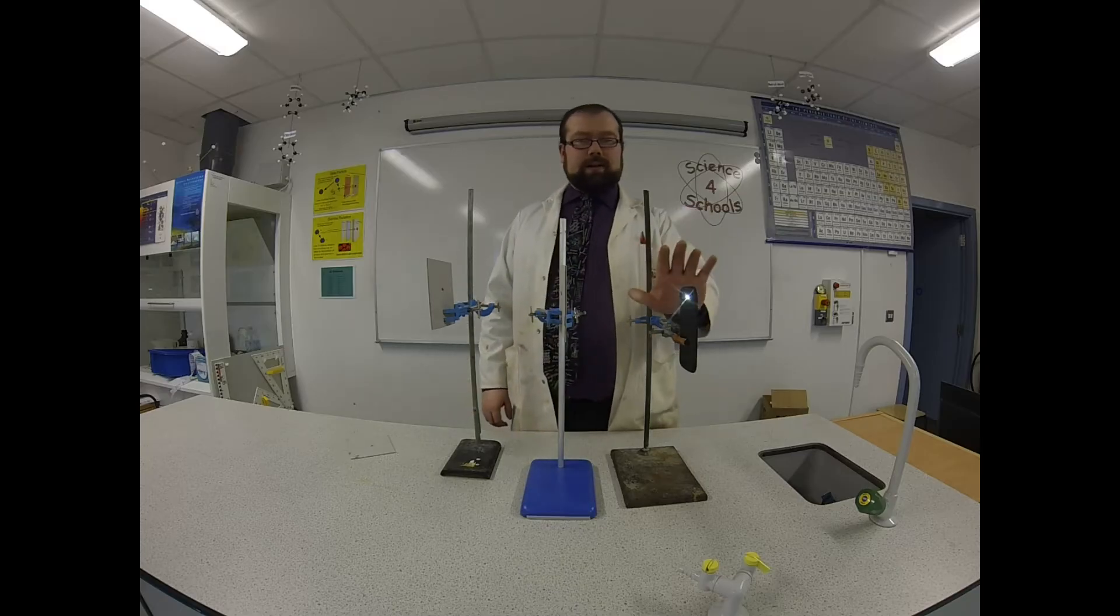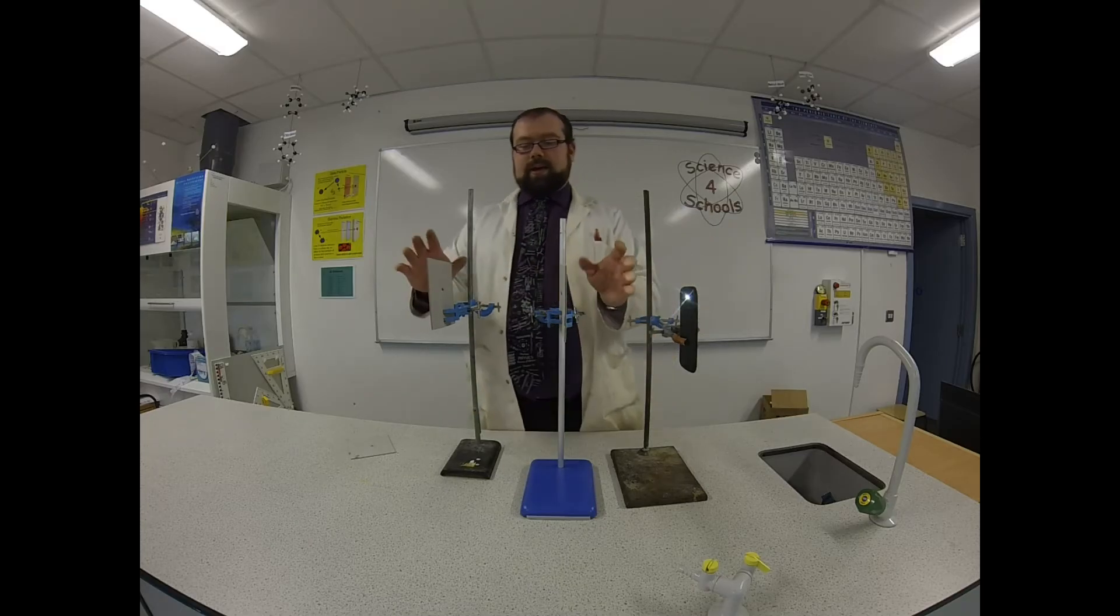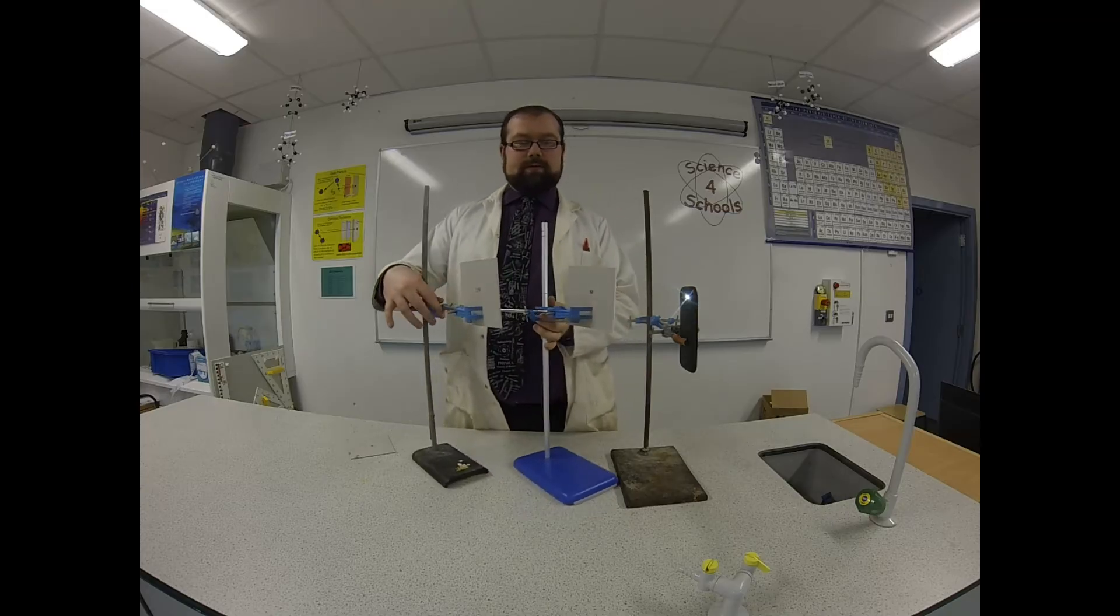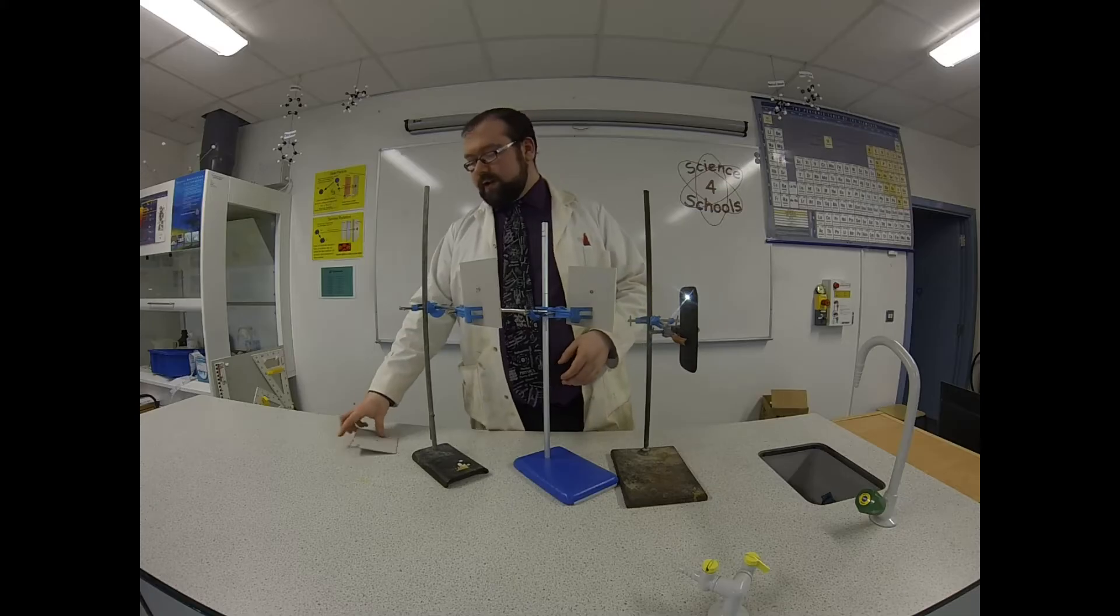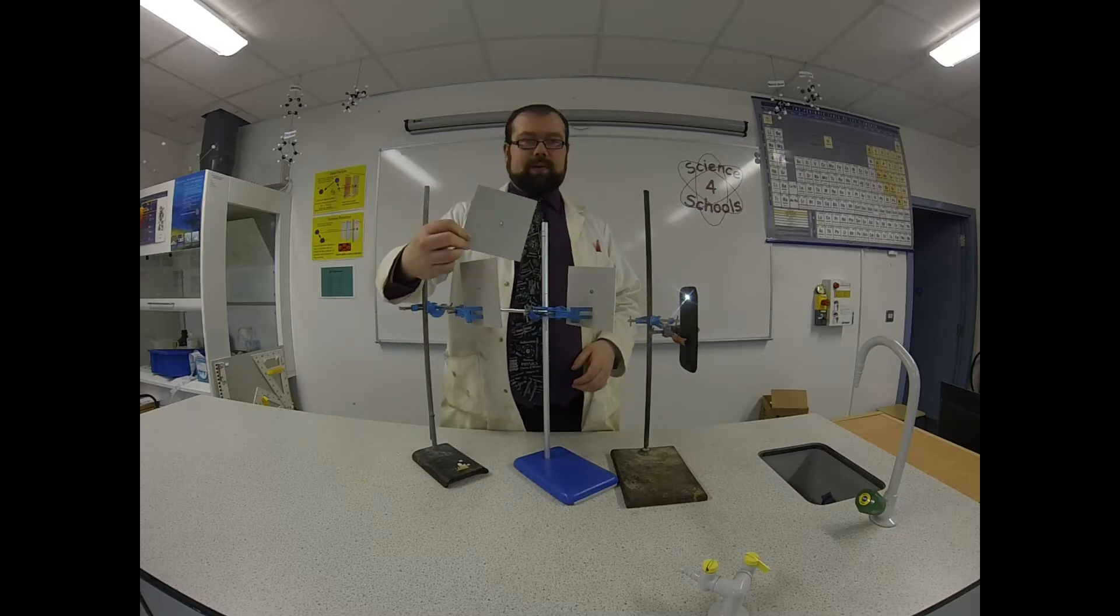So what we're going to need is a light source here. We have these two pieces of cards. Each of them has a hole in it. And I'm holding those in place with retort stands. I've also got a third similar piece of card with a hole in it as well.